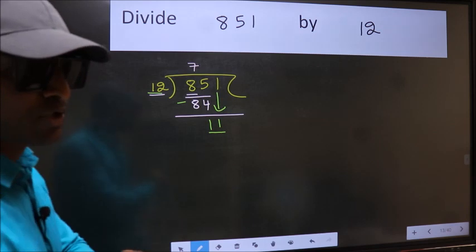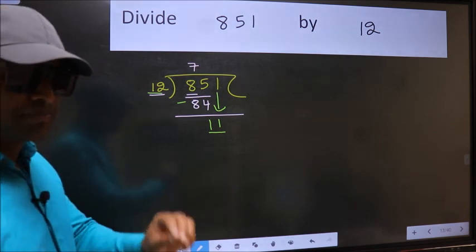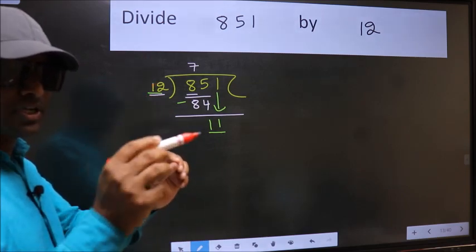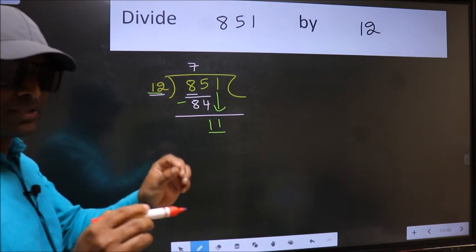I repeat: bringing down the number and also putting a dot and taking zero—both at the same step—you should not do.